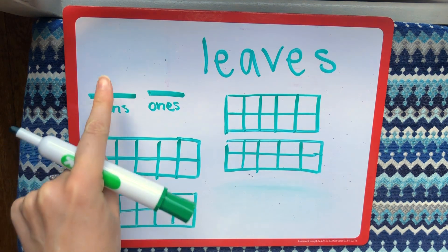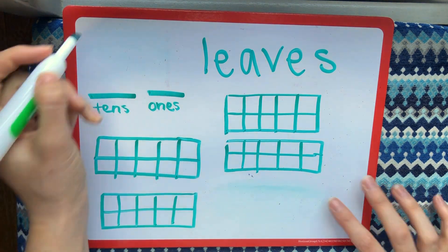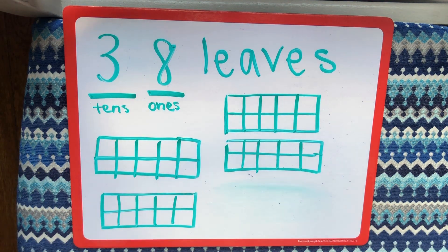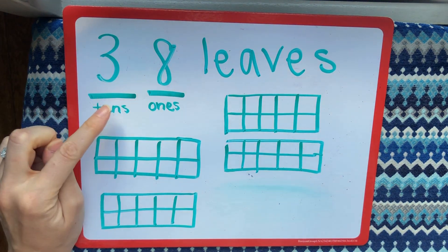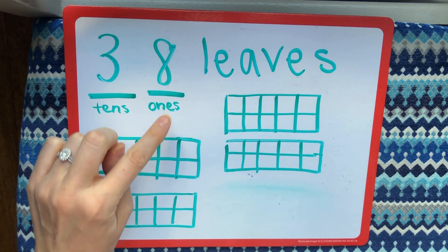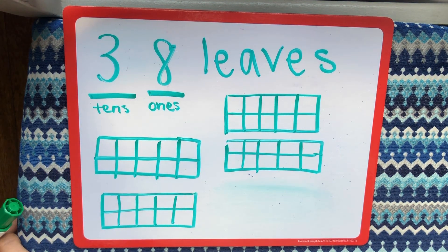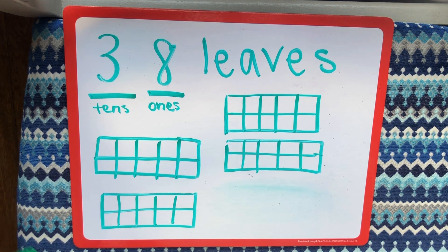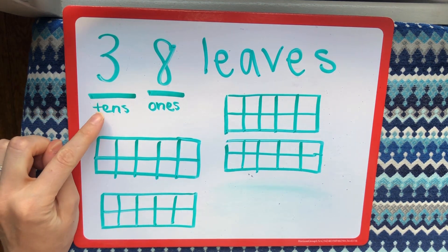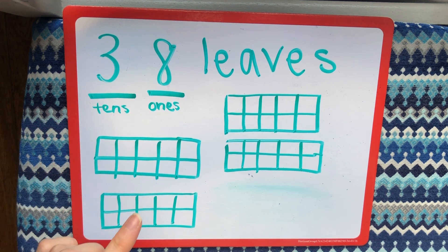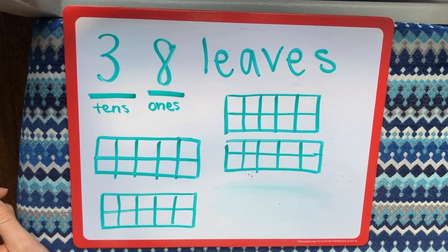I'm gonna write that number 38 right here. 38. I can see that 3 is in the tens place and 8 is in the ones place. Now I'm gonna fill out my ten frames to show how many leaves I have. Since I have 3 in the tens place, I know I will have 3 groups of 10 — that means 3 full ten frames.